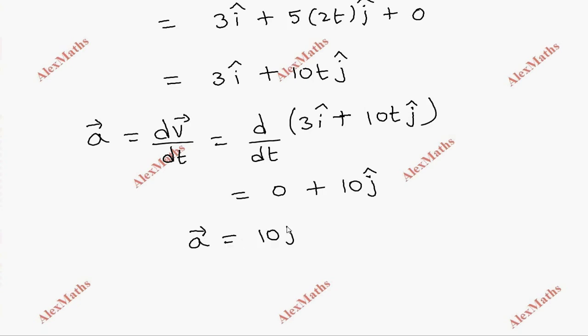I'm using the basic differentiation formula: x^n differentiates to n x^(n-1). For t, the differentiation is 1; for t², it's 2t. This is the formula we use here.